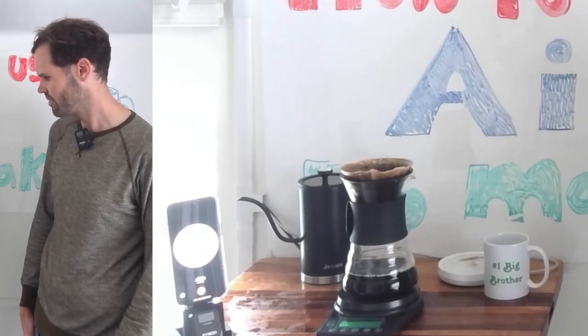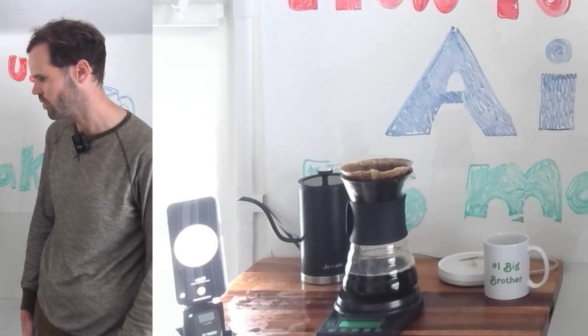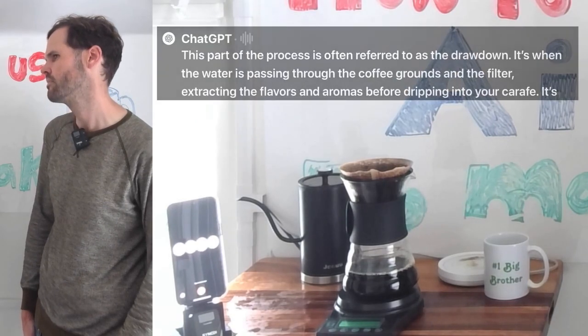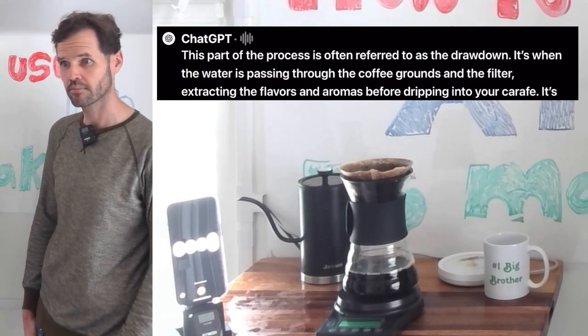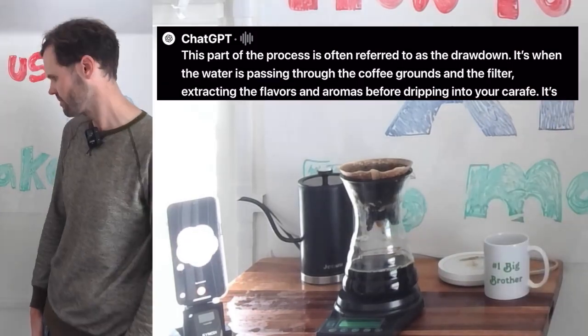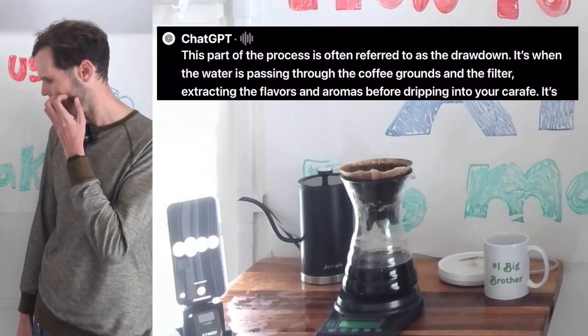What's this part of the process called when I'm just watching the drips come down and waiting to be able to pour? This part of the process is often referred to as the drawdown. It's when the water is passing through the coffee grounds and the filter, extracting the flavors and aromas before dripping into your carafe.